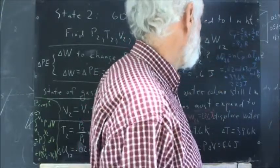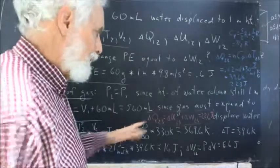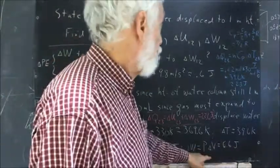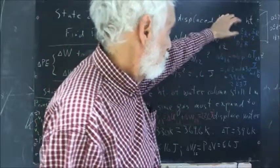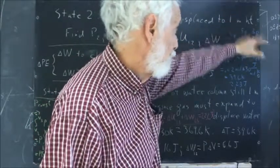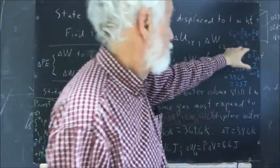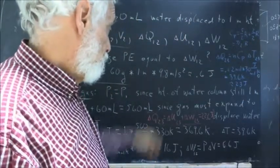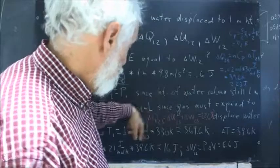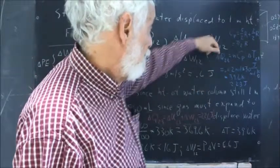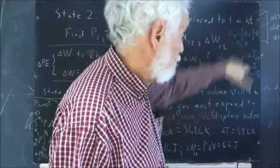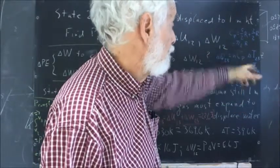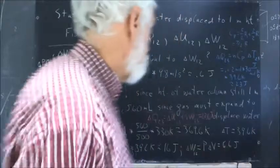Giving us 7 halves R. So instead of calculating delta U separately from the work, which we would do by the 5 halves R and the 2 halves R separately, we do the 7 halves R, combining them into the CP, so that instead of having to add these two bits of energy, we get it all at once, and we come out with 23 joules. The 7 halves R comes out pretty close to 30 joules per mole Kelvin.